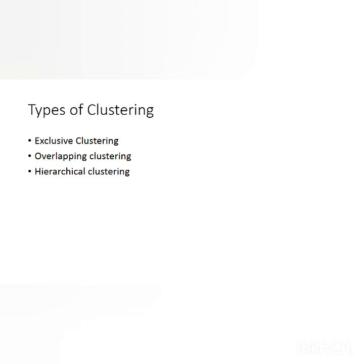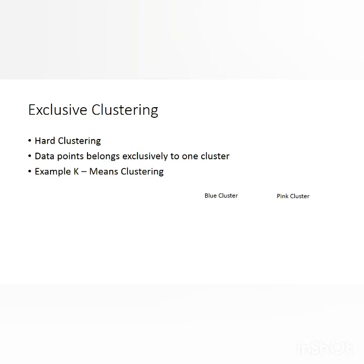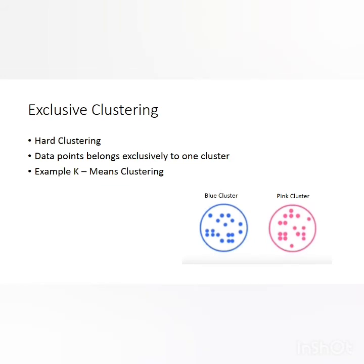Under the types of clustering we are going to see three different types: the first is exclusive clustering, the second is overlapping clustering, and the third is hierarchical clustering. Exclusive clustering is also called hard clustering, where data points belong exclusively to one cluster — the data points in one cluster do not depend on the data points of other clusters. An example of exclusive clustering is K-means clustering. In the diagram, the blue cluster data points do not belong to the pink cluster.